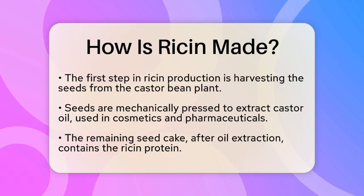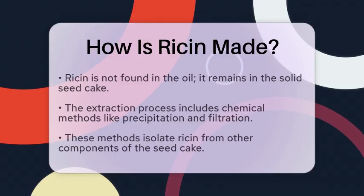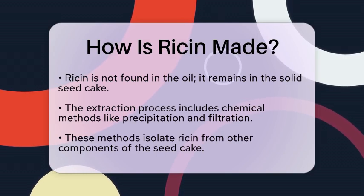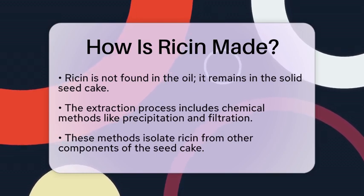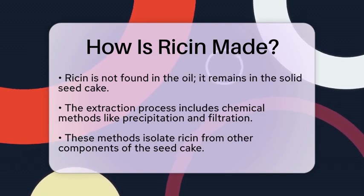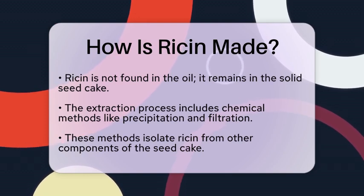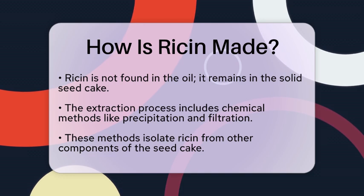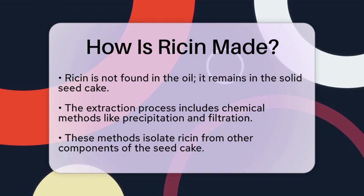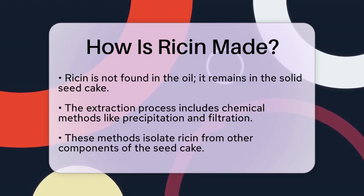Next, the seed cake is processed further. It is important to note that ricin is not present in the oil itself — it remains in the solid material. The extraction of ricin from the seed cake typically involves a series of chemical processes that isolate the protein, including methods such as precipitation and filtration, which separate ricin from other components of the seed cake.